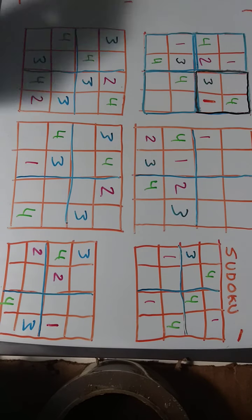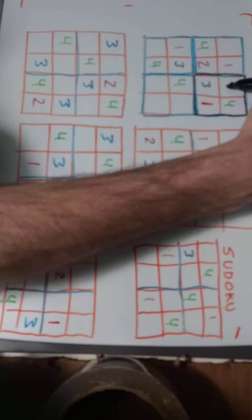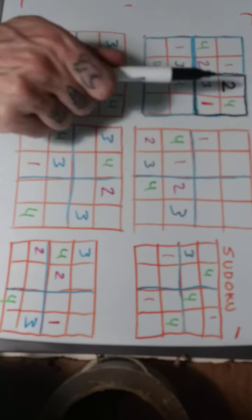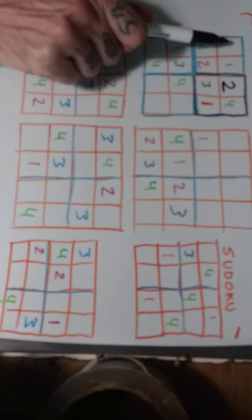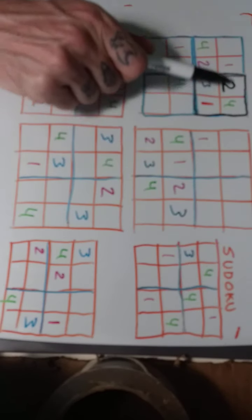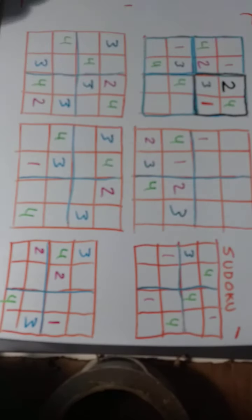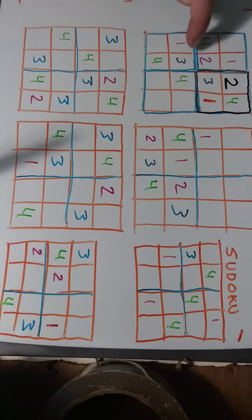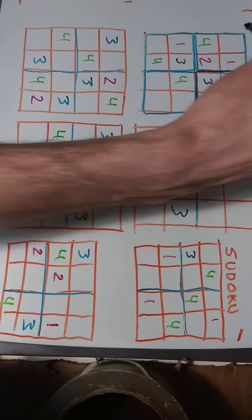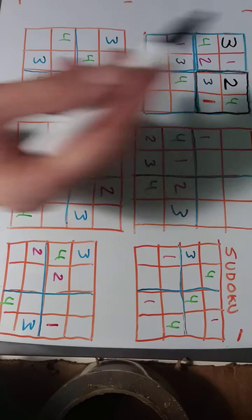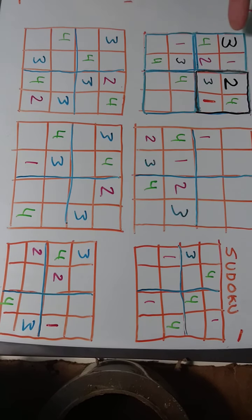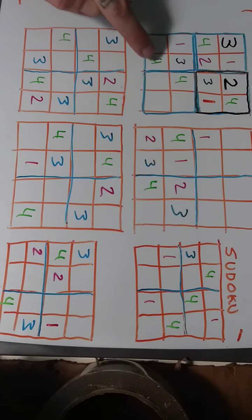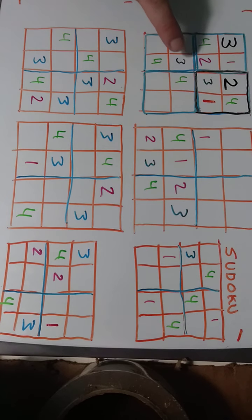In this top right square we're left with one space, so we know we're missing a two. That gives us a clue for this row — we know we need a three there. Or we could look at the top left box and we also need a three there, which confirms it. Then in this column or the bottom left box, we're missing one number.